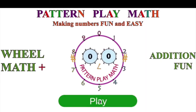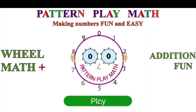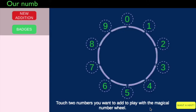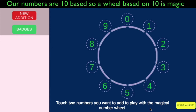Let's play with Wheel Math Edition app. The top is zero and it's also ten. We are going to be adding numbers on the number wheel. We can just pick any two numbers and the number wheel will help us find the answer.